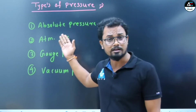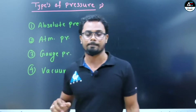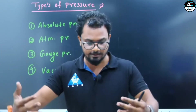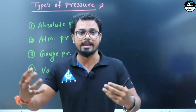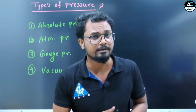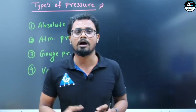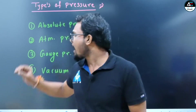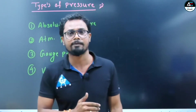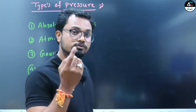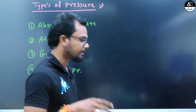What is absolute pressure, what is atmospheric pressure, what is gauge pressure, and what is vacuum pressure? In our environment, air exerts a force on bodies — the pressure exerted by the atmosphere is called atmospheric pressure. To understand the other types, I will draw some lines — it will be very easy to understand visually.